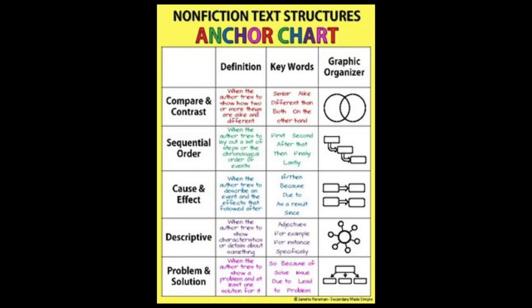We've got compare and contrast, which is talking about how things are the same and different. We've got sequential order, which means this happens first, second, and this happens last. We've got cause and effect, where the author describes something that's happening and the effect it has on other things. We've got descriptive, also known as description, where you've got a topic and tell all about it. The last one is problem and solution, where there's a problem and then what we do to fix it.